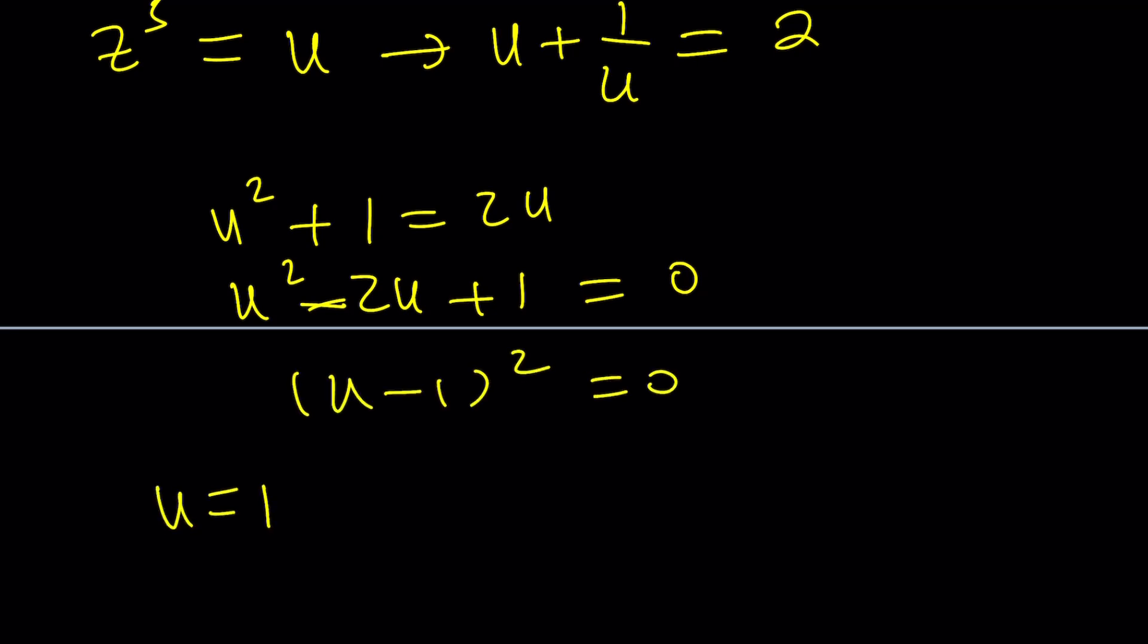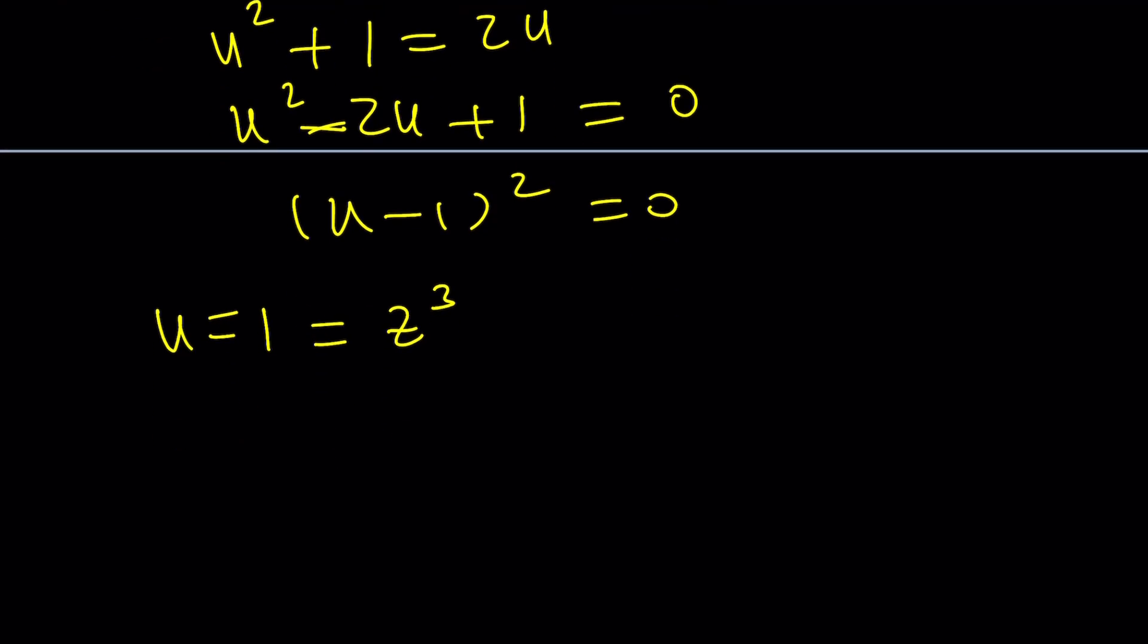From here, we get u minus 1 squared equals 0 and u equals 1. And u equals 1 is a single solution, but double root. Let's set it equal to z cubed back substitute, right? Because u is z cubed.